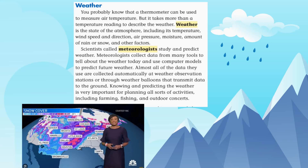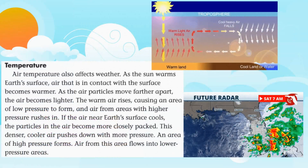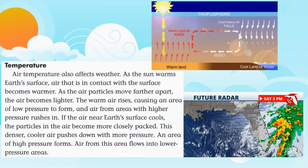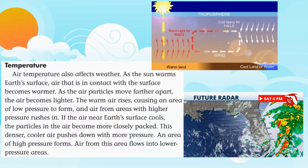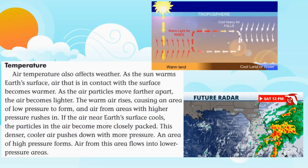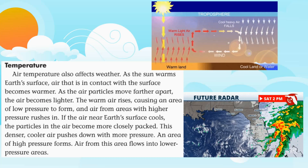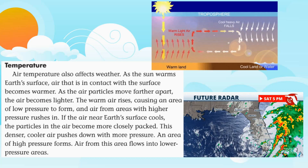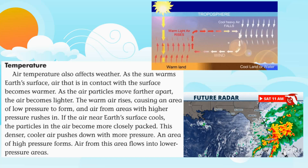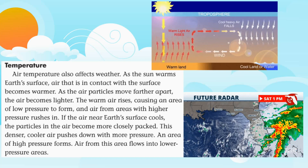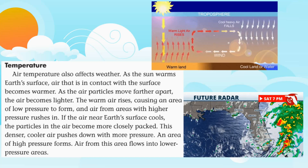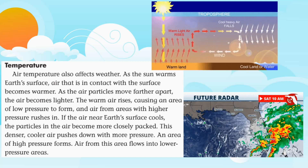Knowing and predicting the weather is very important for planning all sorts of activities, including farming, fishing, and outdoor concerts. Air temperature also affects weather. As the sun warms Earth's surface, air in contact with the surface becomes warmer. As the air particles move farther apart, the air becomes lighter, and the warm air rises, causing an area of low pressure to form.